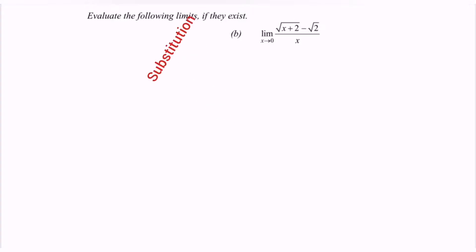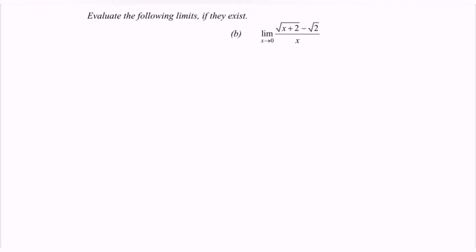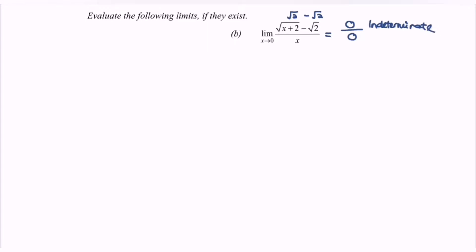I am going to substitute the value. If I substitute x equals 0, the numerator becomes square root of 2 minus square root of 2, giving 0, and the denominator is also 0. So this is considered an indeterminate form.